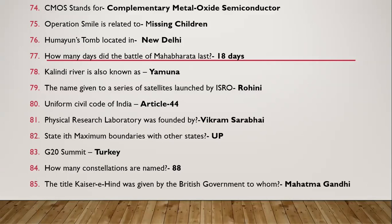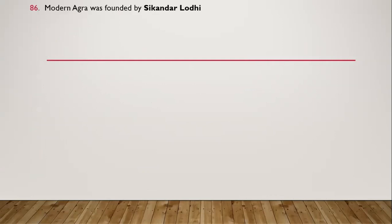Question 85: The title Kaiser-e-Hind was given by the British government to whom? It was given to Mahatma Gandhi. Question 86: Modern Agra was founded by whom? It is founded by Sikandar Lodi.